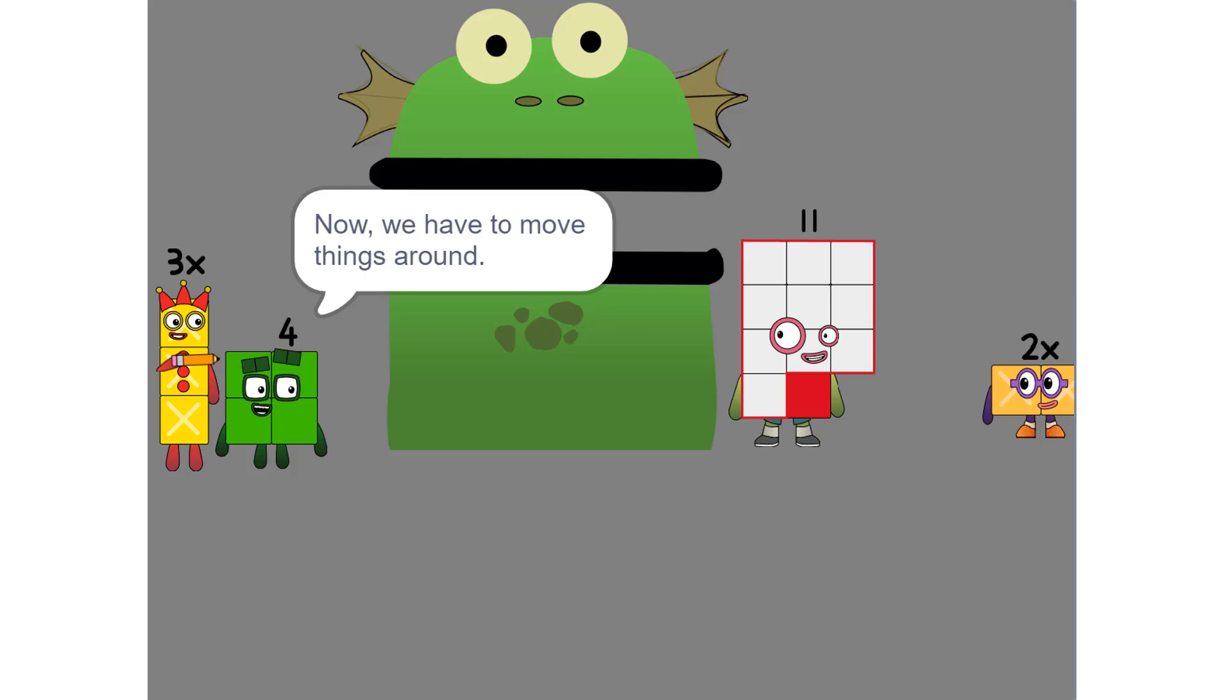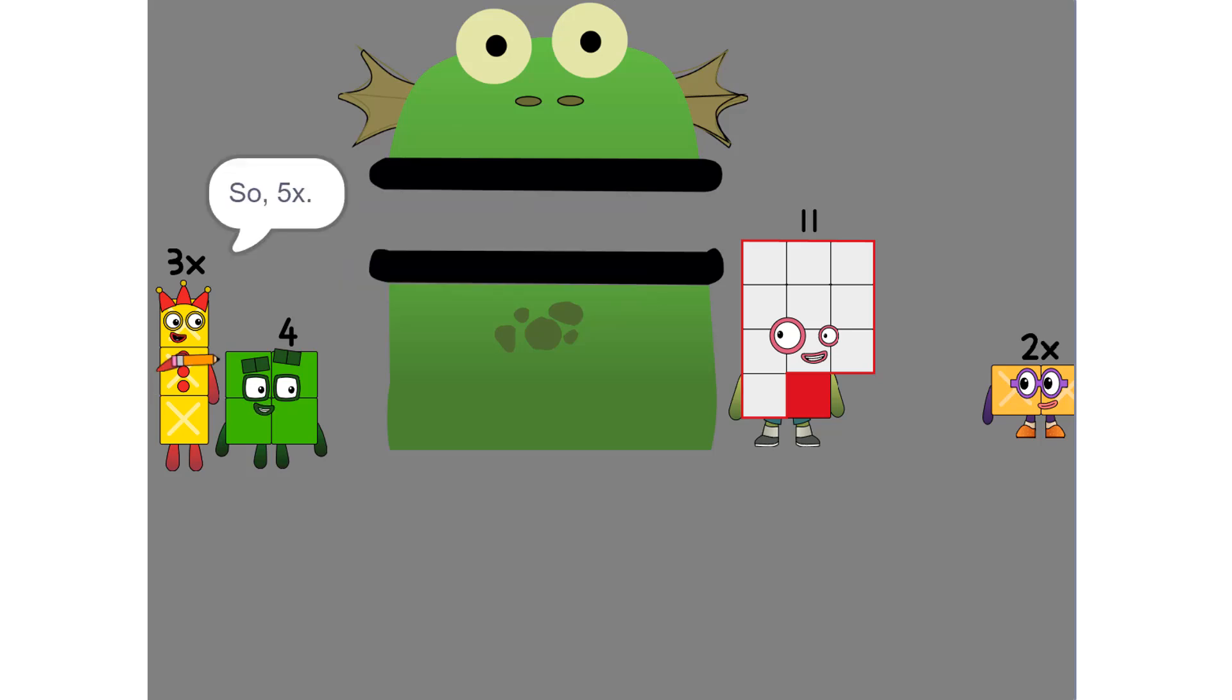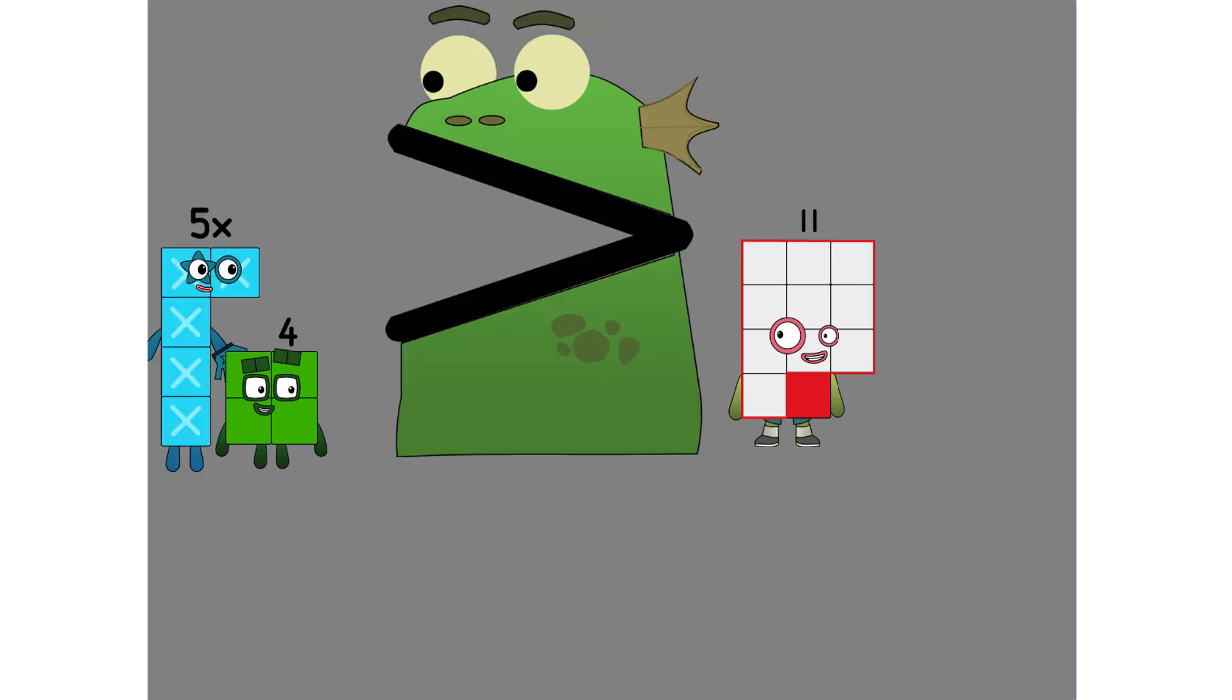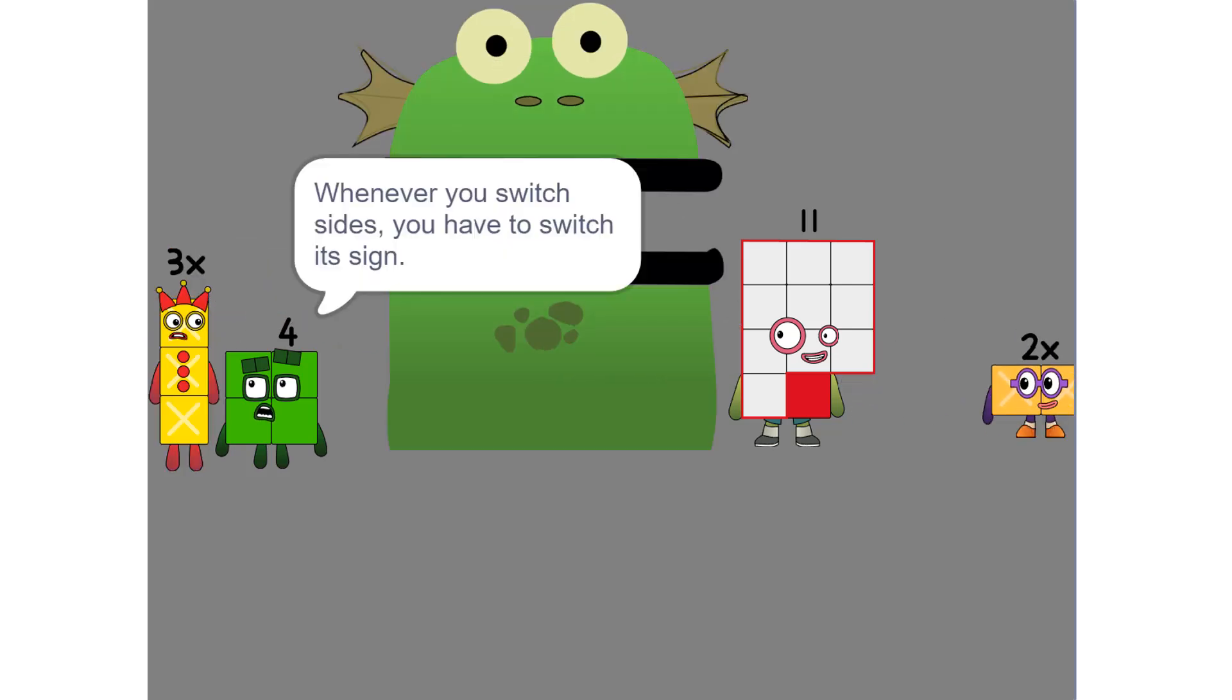And 5 plus 6 is 11. Yeah. Now we have to move things around. We have to move this 2x to this side. Oh, so 5x... Whenever you switch sides, you have to switch its sign. So if it's positive, it becomes negative, and vice versa.